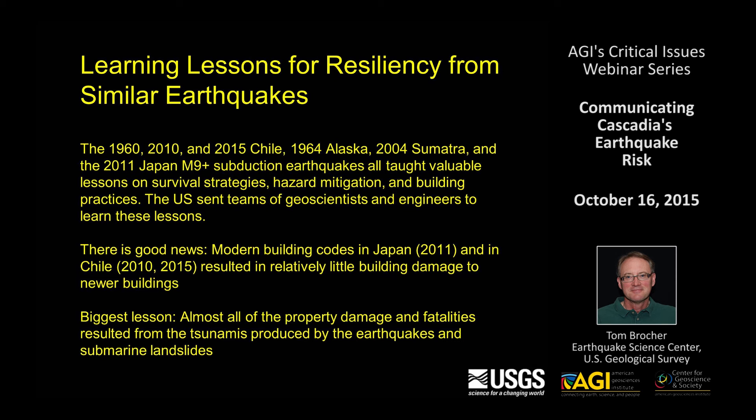There have been about six large subduction zone earthquakes in the past 50 years we can learn from: three in Chile, one in Alaska, one in Sumatra, and one in Japan. All have given us new lessons on surviving earthquakes and tsunamis, how to prepare, and have improved building practices. After each event, the U.S. sends teams of geoscientists and engineers to learn these lessons. Recently there has been good news — modern building codes in Japan and Chile have been very effective in reducing building damage.